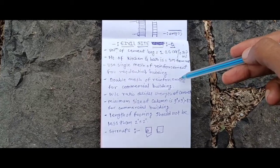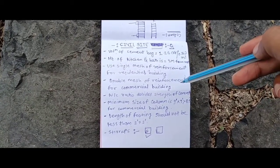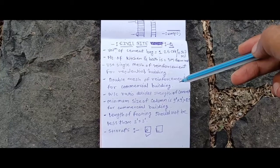Minimum size of column is about 9 inch by 9 inch for commercial building.